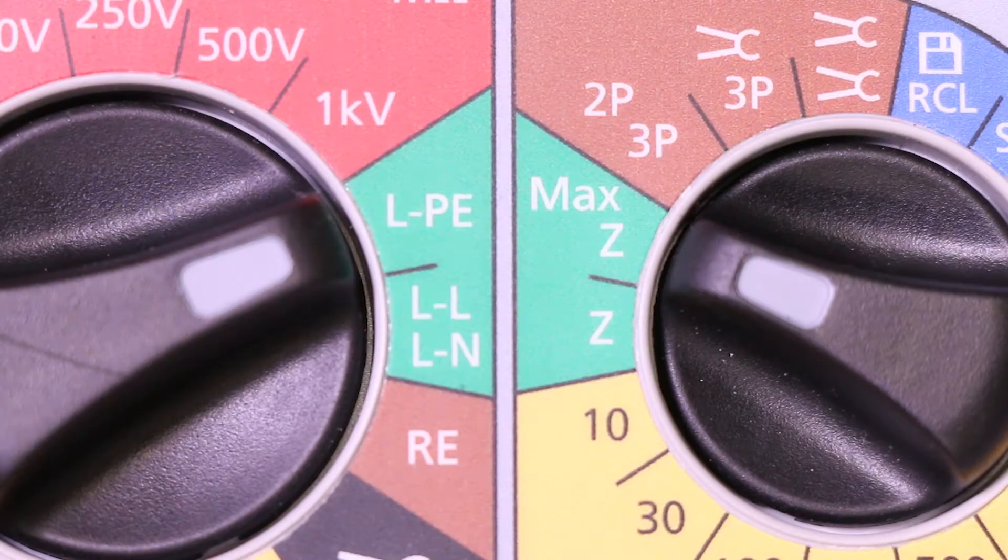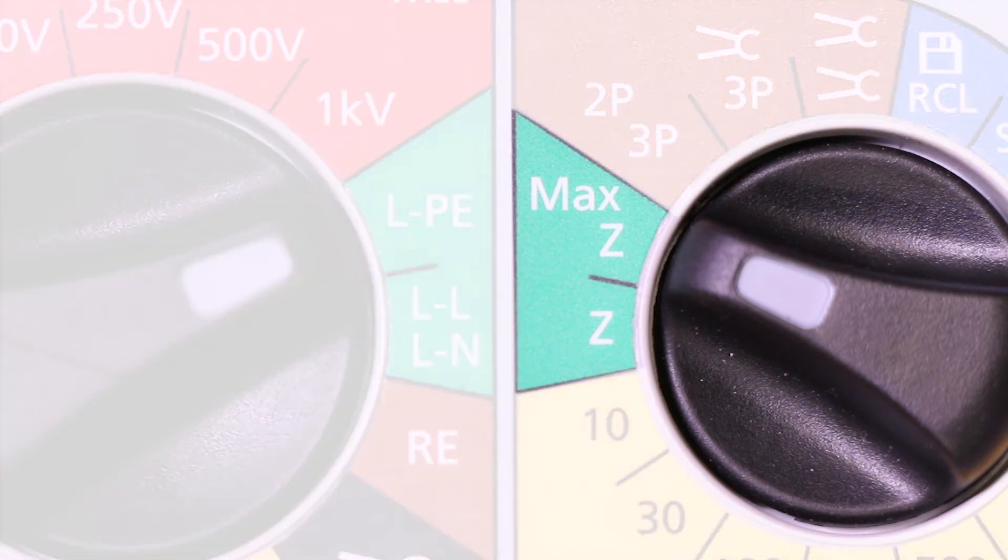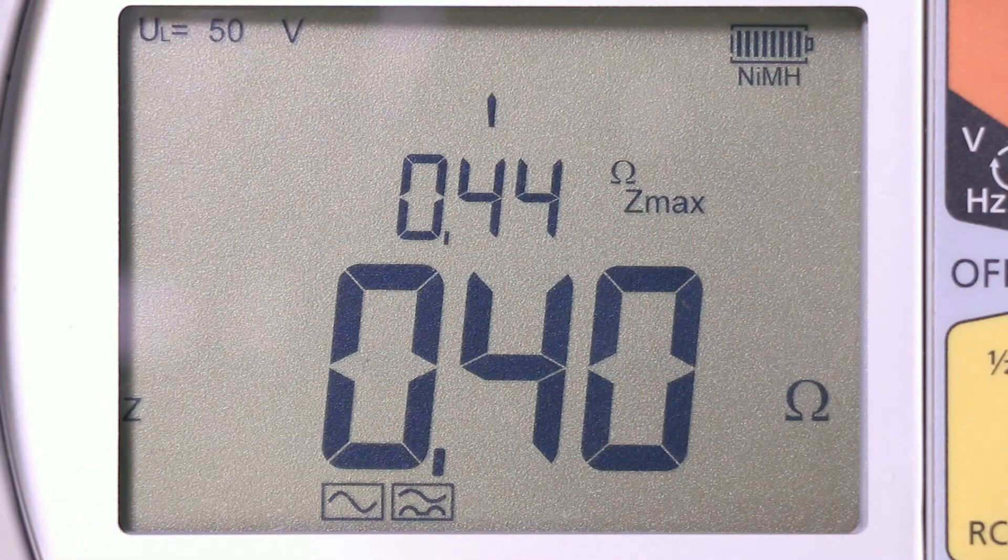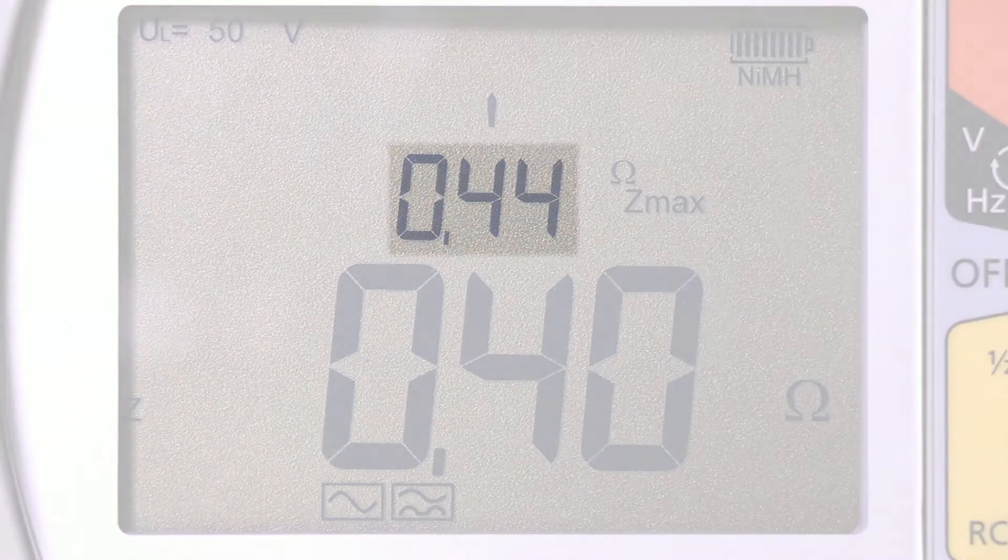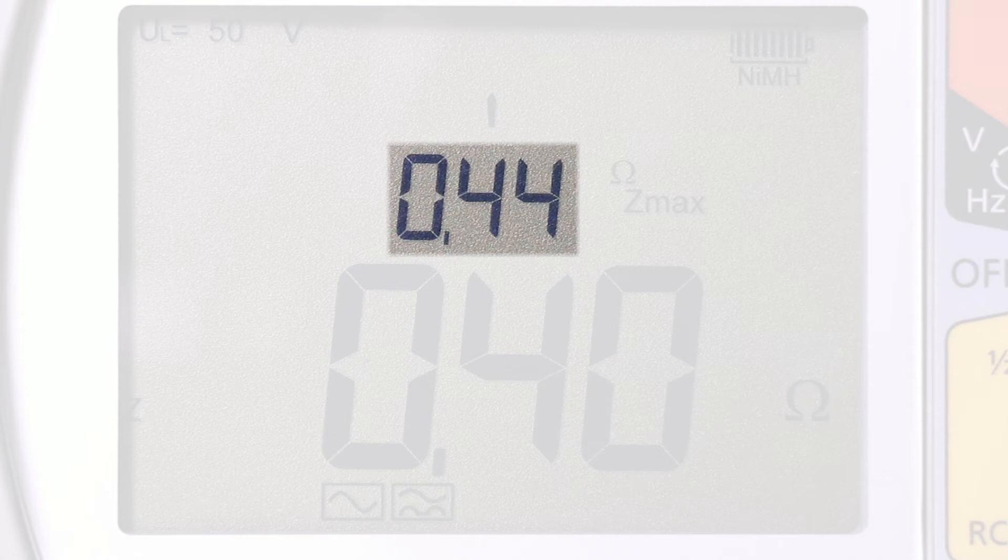The other feature that is available for loop impedance testing is Z-Max. You'll see the Z-Max setting on our second range switch. Selecting it enables you to carry out a sequence of tests whereby the highest reading is always maintained on the upper of the two measurement displays.